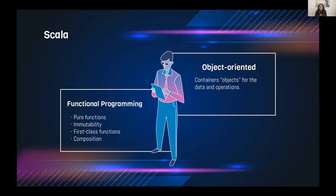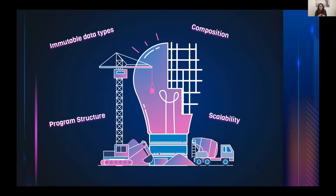Functional programming is based on programming using functions and composing them together, dealing with immutable data types that can't be changed — only by passing them around functions and building new data types from them with the changes we want. Scala also supports first-class functions, which means functions are treated like values.